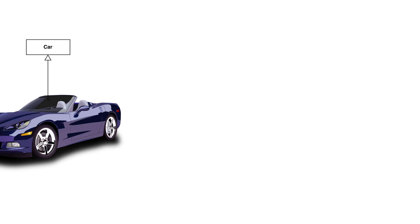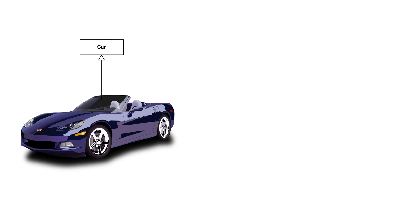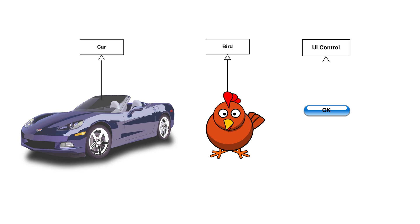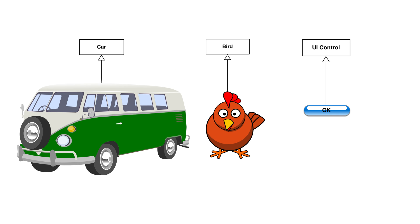Parent classes usually represent a more general concept. So a sports car is a child of a car, a chicken is a child of a bird, and a button is a child of a UI control. In the car example, we can also have a minivan as a child of a car. A parent can have multiple children.